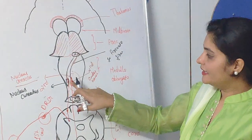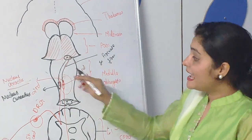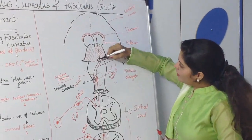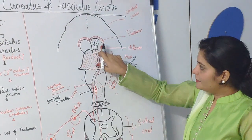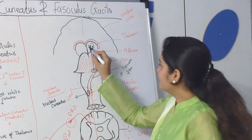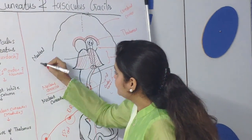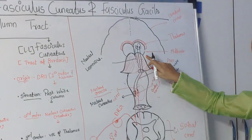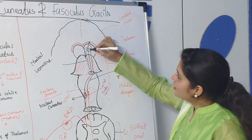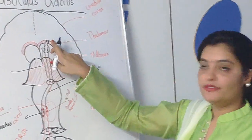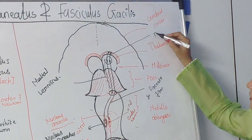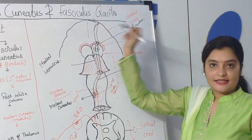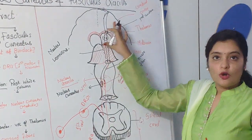From the nuclei, the internal arcuate fibers originate as sensory fibers, decussate to the opposite side, and travel from the medulla oblongata up through the pons and into the midbrain. The fibers traveling from the medulla through the pons and midbrain are called the medial lemniscus. After passing through the midbrain, they enter the VPL nucleus of the thalamus, which is the third order neuron for this tract. From the VPL nucleus, the tract travels to the sensory cortex in the parietal lobe.